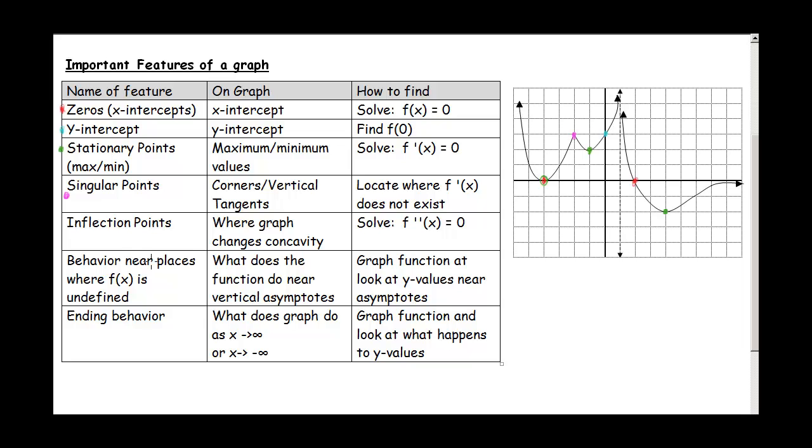Inflection points. These are where our graph changes from concave down to concave up or reverse. Let's see here, we're concave up, here we're concave up, here we're concave up and then in here it changes to concave down. So I think our inflection point is right about here.